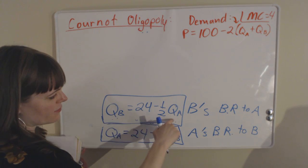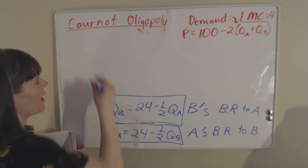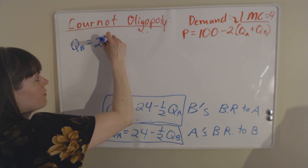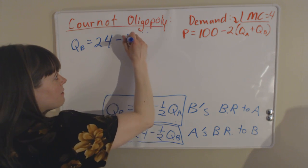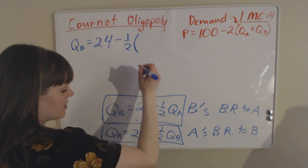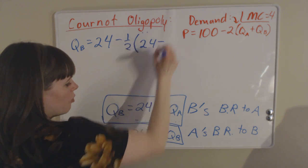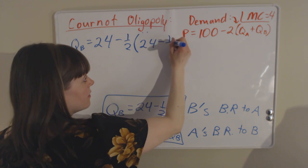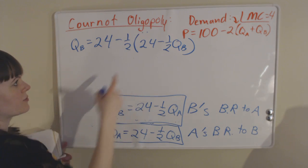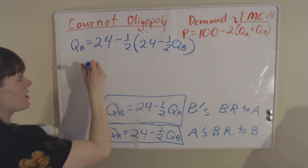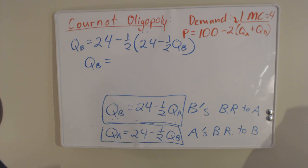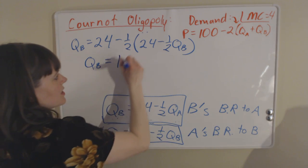I can take this function from B and plug in QA. So I know that QB equals 24 minus 1 half QA, and we're going to plug in this whole thing for QA. So minus 1 half times 24 minus 1 half QB. Now the entire thing is in terms of QB, and I can solve that using algebra. When I solve it down, I get the quantity for firm B is going to be 16.